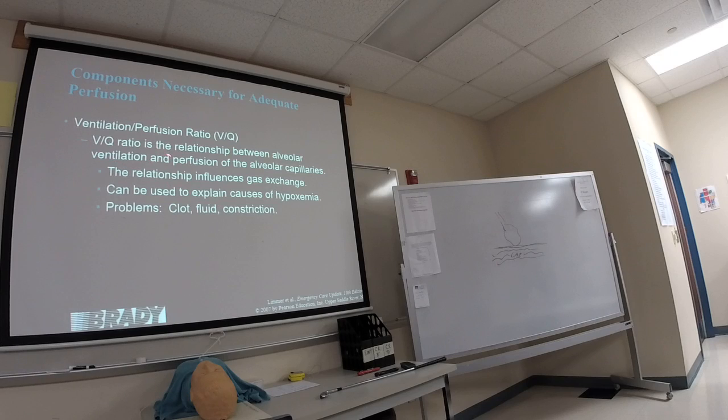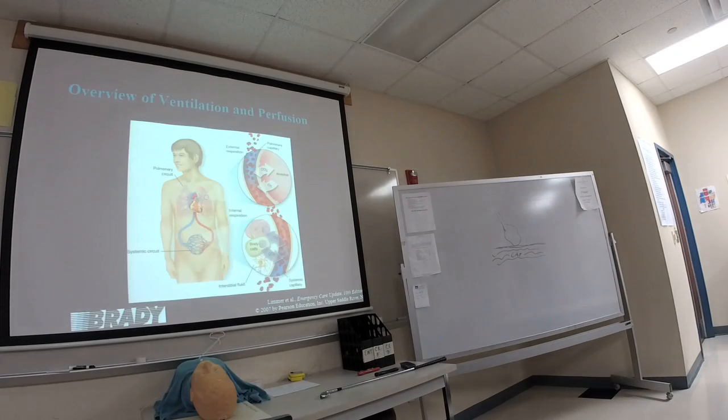The problem with this VQ mismatch is you want a good exchange between ventilation and perfusion, good gas exchange. Things that mess up this VQ ratio are like clots in the lungs, pulmonary embolisms, fluid. If too much fluid builds up here as in congestive heart failure, it's going to mess up the VQ ratio because not as much gas is going to diffuse across that membrane. Emphysema causes that constriction. Mucus in the lungs, in the airways, causes VQ mismatch.